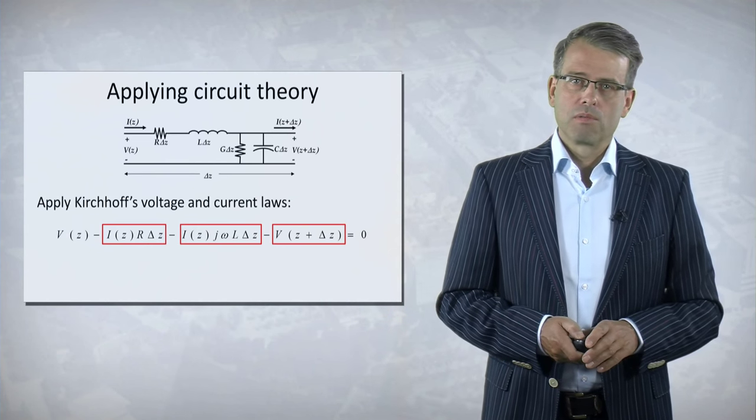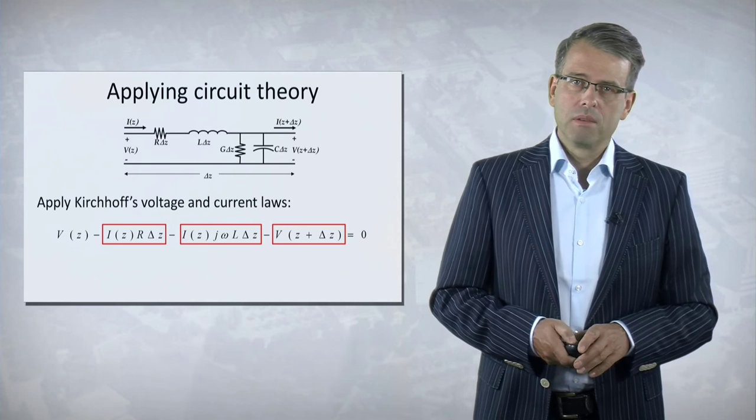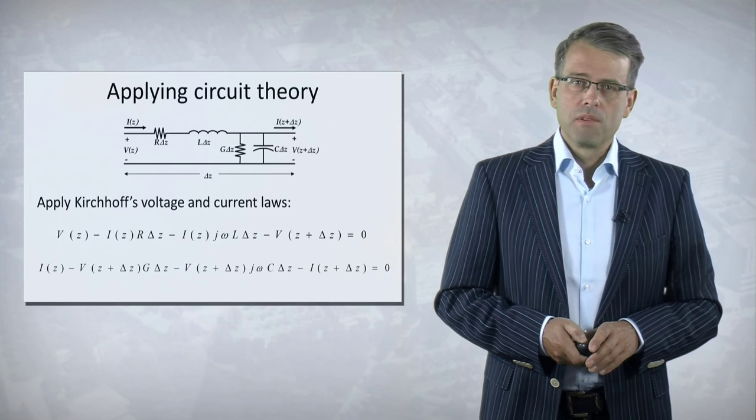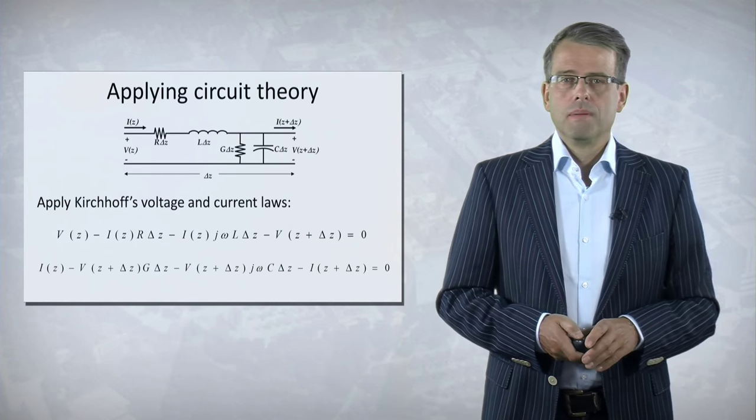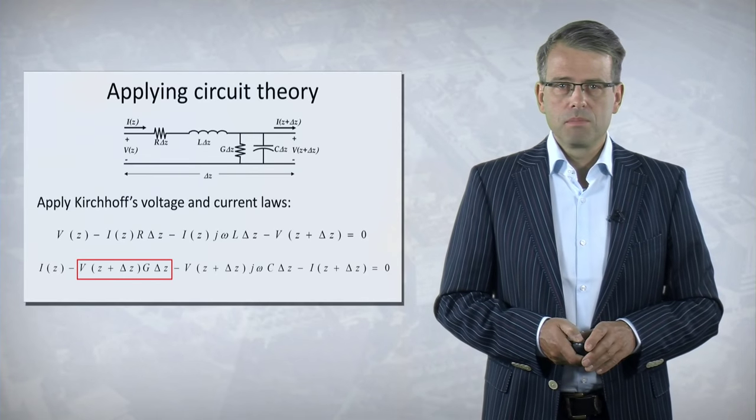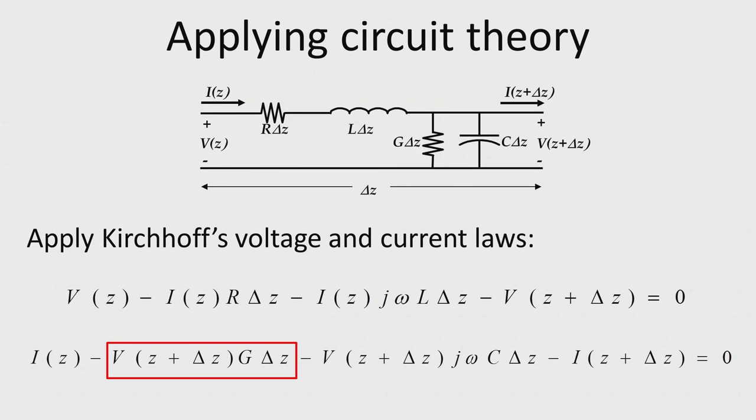The second Kirchhoff law is the current law. We can apply the Kirchhoff current law to the output node. Then we find that the total current flowing into this node has to be zero. So that means that the current at the input minus the current through the shunt conductance minus the current through the shunt capacitance minus the current leaving the circuit has to be zero.